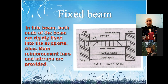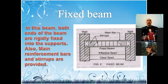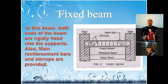A fixed beam is one with both ends restrained from rotation. In reality, beam ends are never completely fixed; they are often modeled as such for simplicity. However, they can be restrained enough relative to the stiffness of the beam and column to be considered fixed.